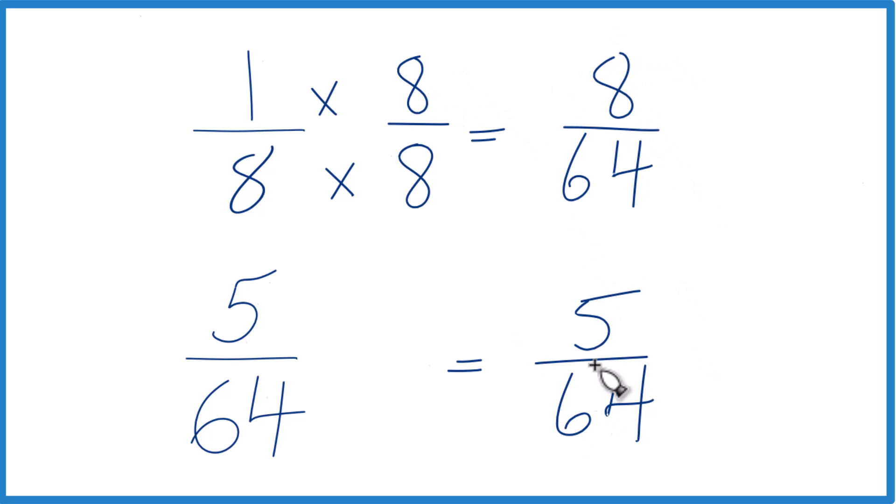One times eight is eight. So let's compare these. Eight is greater than five, so eight-sixty-fourths, that's greater than five-sixty-fourths. And these are equivalent. They have the same value. So one-eighth, that's going to be greater than five-sixty-fourths.